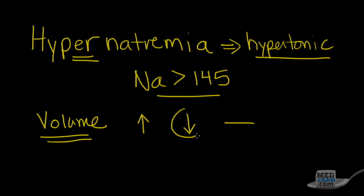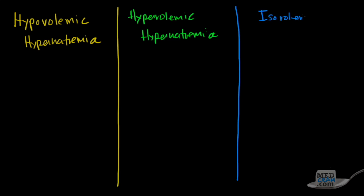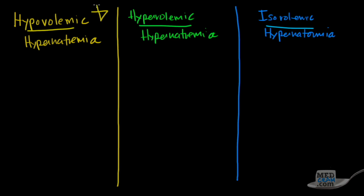The first thing we'll talk about is hypovolemic hypernatremia. Then we'll talk about hypervolemic hypernatremia, and then isovolemic hypernatremia. By far the most common is hypovolemic hypernatremia — people with high sodiums who look like they don't have a lot of fluid. Then people with high sodiums who look like they have too much fluid, and those whose volume status looks about the same.